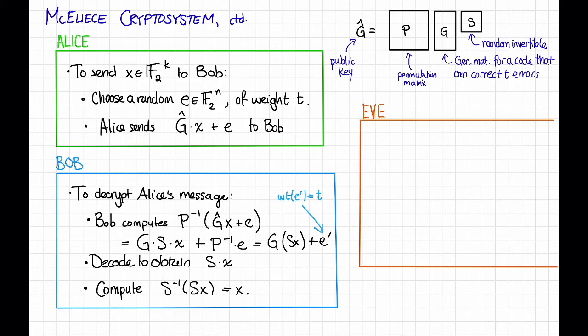Okay, so what does Eve see through all of this? So Eve sees the message that Alice sent. That's G hat X plus E. And she also sees G hat because that's Bob's public key. It's publicly available to anybody, including Eve. And our hope is that given this information, Eve cannot recover X.